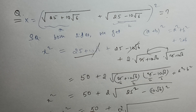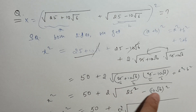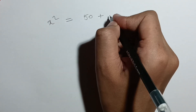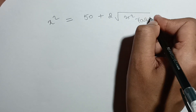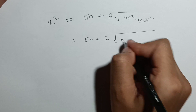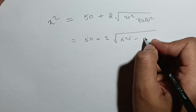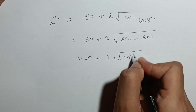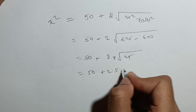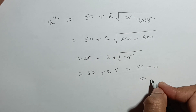So we have x² = 50 plus 2 times the square root of (25² minus (10√6)²). That gives us 50 plus 2 times the square root of (625 minus 100×6), which is 625 minus 600 = 25. So x² = 50 plus 2 times √25 = 50 plus 2 times 5 = 50 plus 10 = 60.